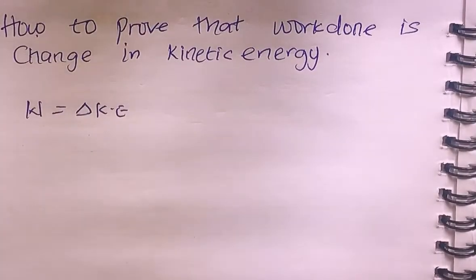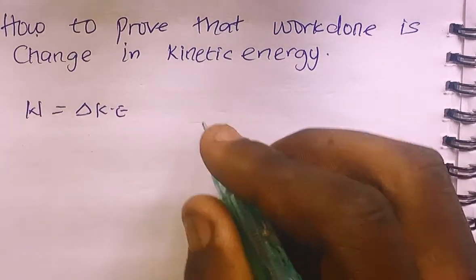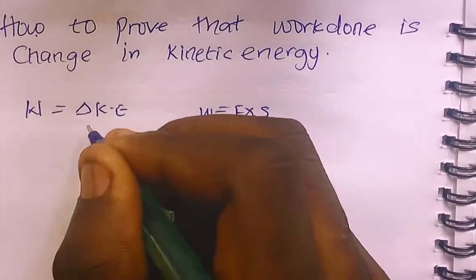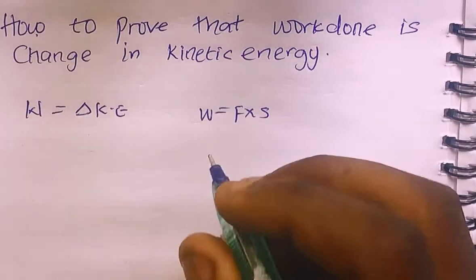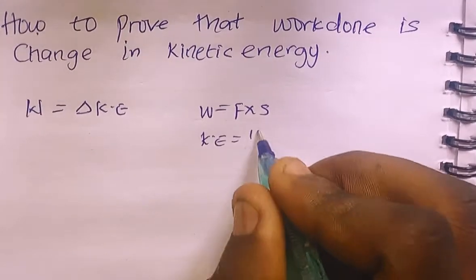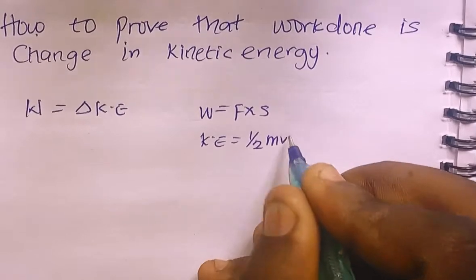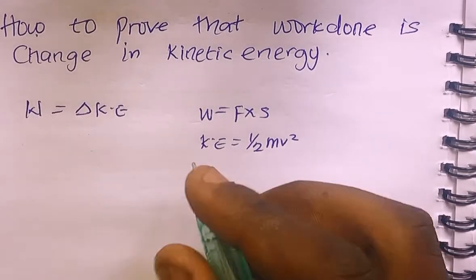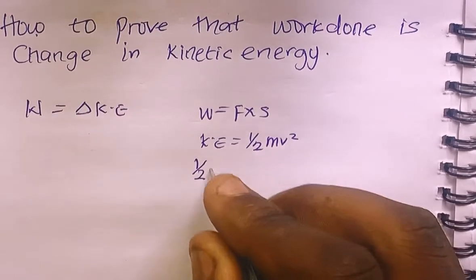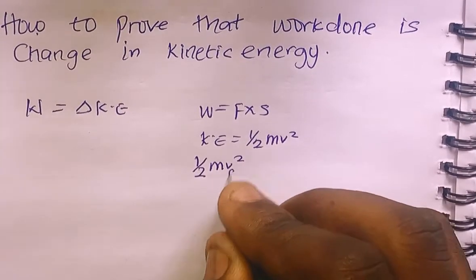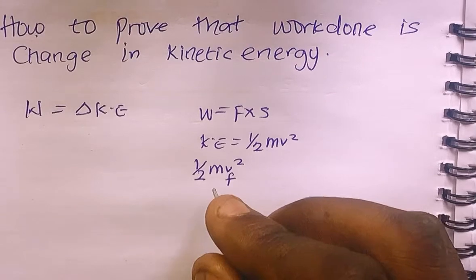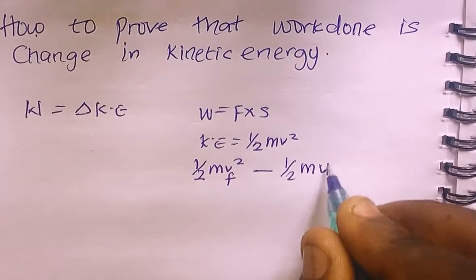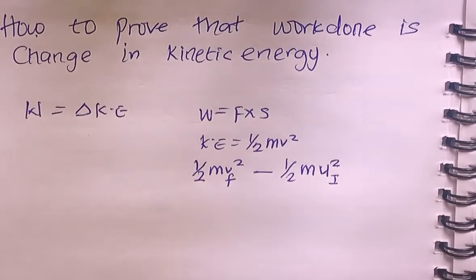First, we need to consider the formula for work: work equals force times distance. And the formula for kinetic energy is KE = ½mv². The formula for change in kinetic energy is ½mv² minus ½mu², that is our final kinetic energy minus our initial kinetic energy.